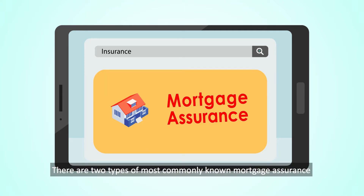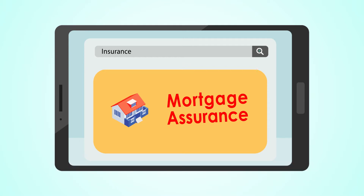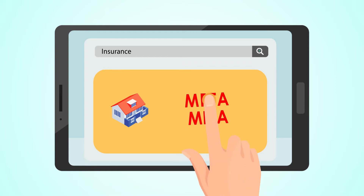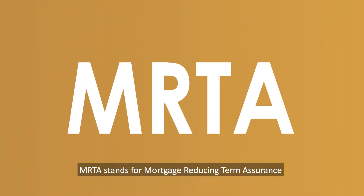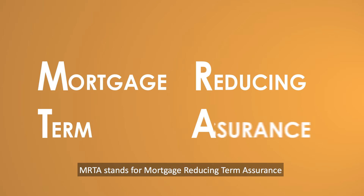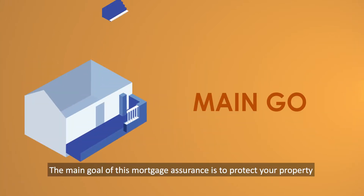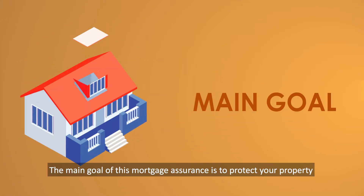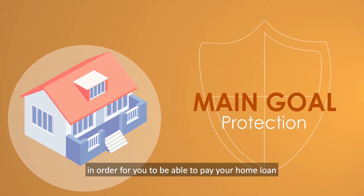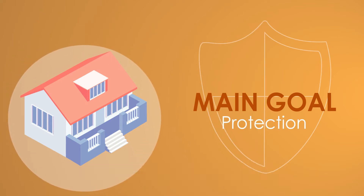There are two kinds of most commonly known mortgage insurance: MRTA and MLTA. Let's look at MRTA first. MRTA stands for Mortgage Reducing Term Assurance. The main goal of this mortgage assurance is to protect your property in order for you to be able to pay your home loan.